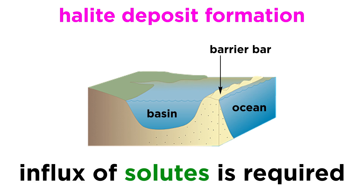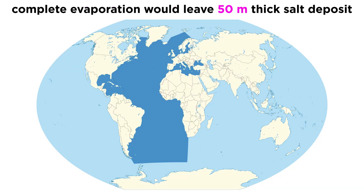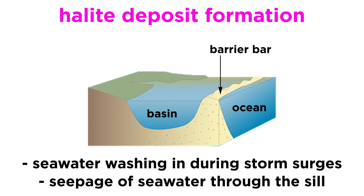In order to form kilometer-thick salt deposits, there must be a regular influx of solutes into the basin, providing the materials to make the salt. For example, even if the entire Atlantic Ocean were to be fully evaporated, the resultant salt deposit would only be around 50 meters thick. This influx can be accomplished in a few ways, such as seawater washing in during storm surges, or the seepage of seawater into the basin through the sill.